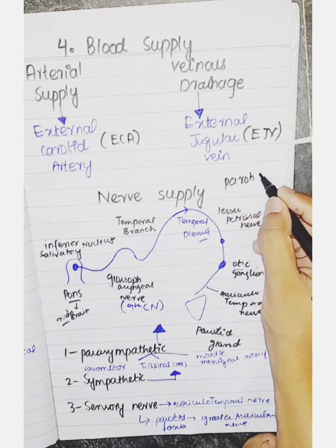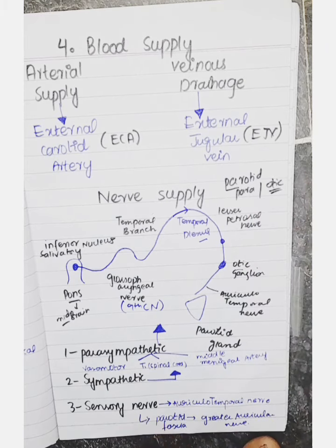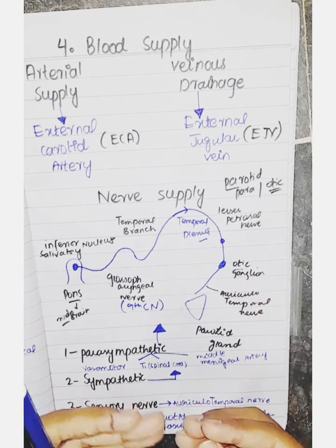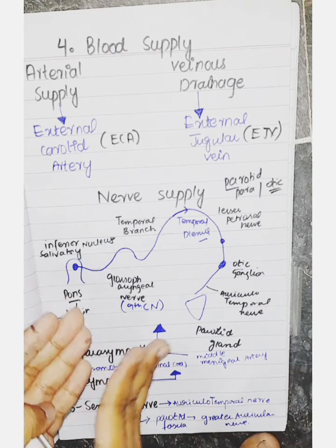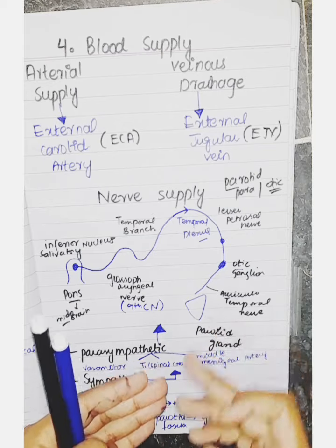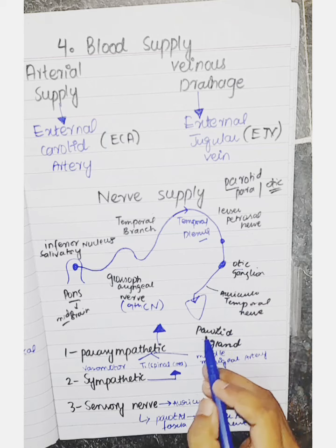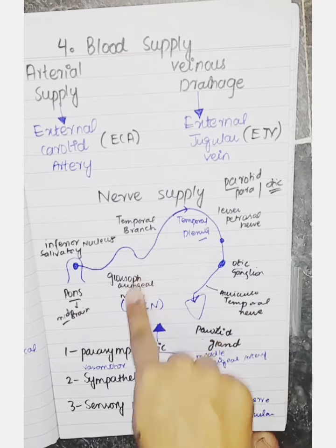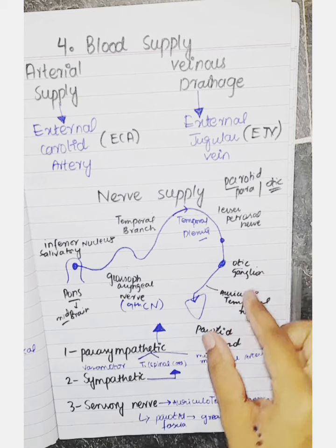From the tympanic plexus, the lesser petrosal nerve arises and travels to the otic ganglion — a cluster of nerve cell bodies. From the otic ganglion, fibers travel via the auriculotemporal nerve, which is named because it goes toward the ear and temporal region, and this nerve enters the parotid gland. So the full parasympathetic pathway is: pons → inferior salivatory nucleus → glossopharyngeal nerve → tympanic branch → tympanic plexus → lesser petrosal nerve → otic ganglion → auriculotemporal nerve → parotid gland.